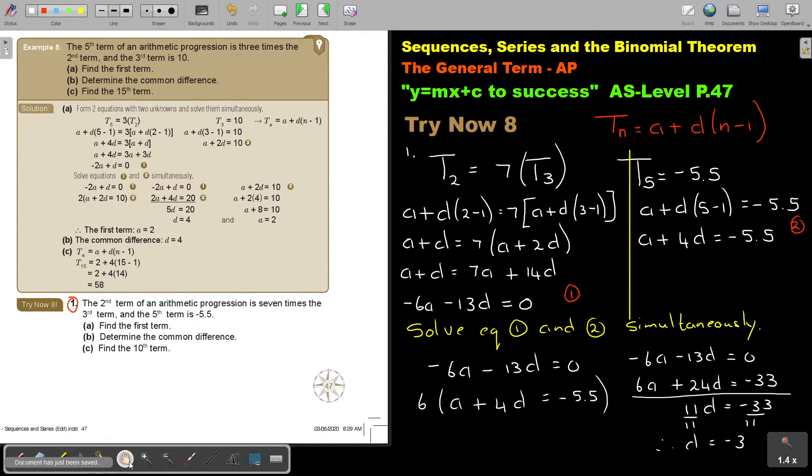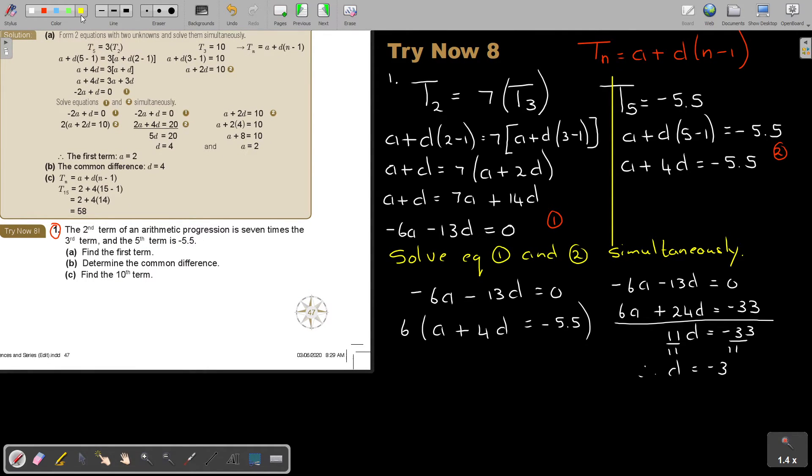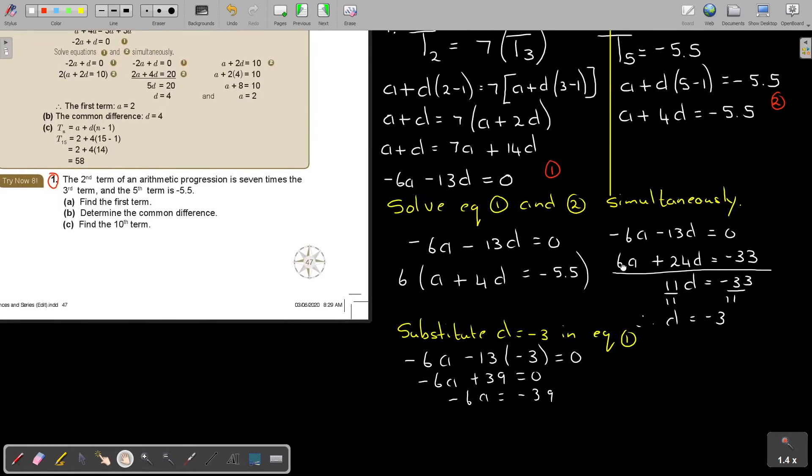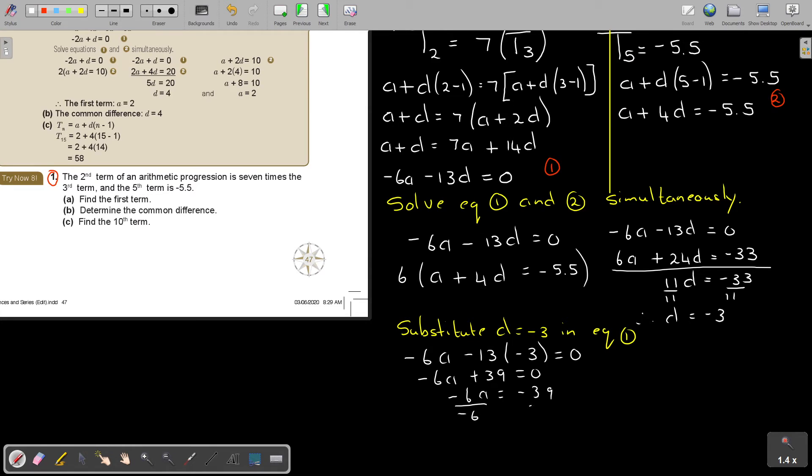Okay, now I'm still finding the first term. So I substitute. Which one will I take? I think take this first one. I like that one. So it's going to be negative 6A minus 13, and it's going to be negative 3 equals 0. So negative 6A, and it's going to be plus 39. So negative 6A equals negative 39. Let's just move it up a little bit. So if I divide by negative 6, negative 6, so therefore, A will be 6 and a half.